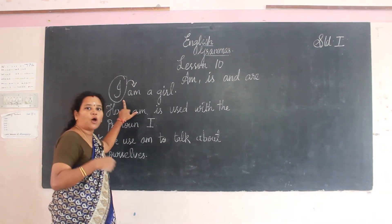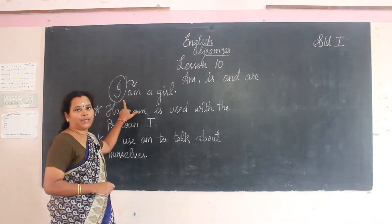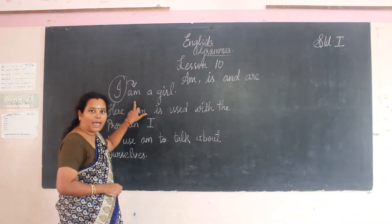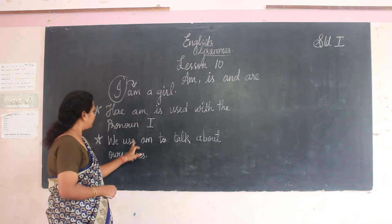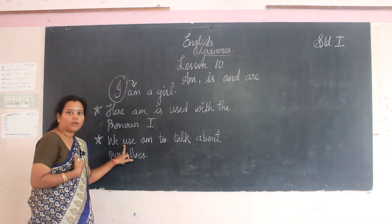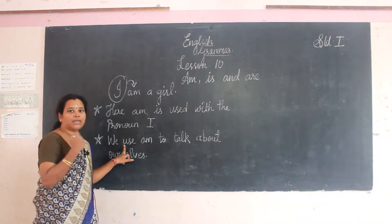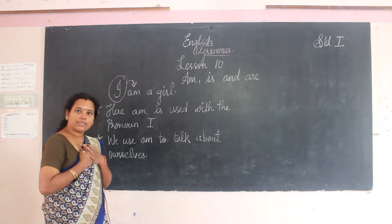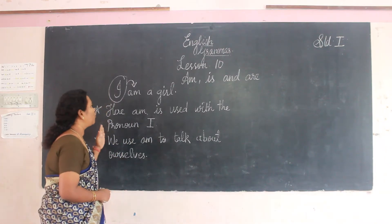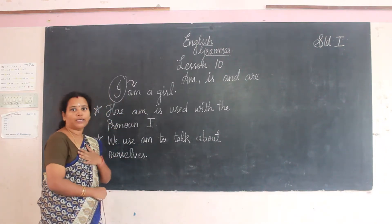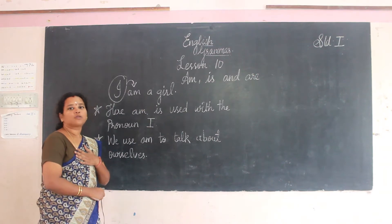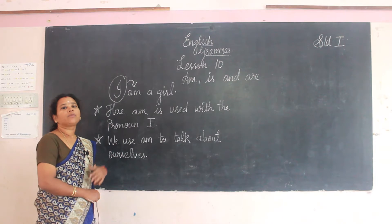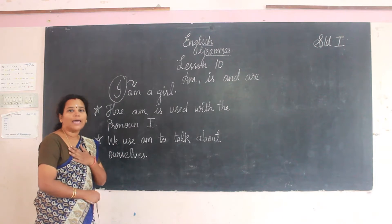We are talking about ourselves. Why are we using 'I' before 'am'? Because we are talking about ourselves. So the same way here I am talking about myself, so I use 'I am'.